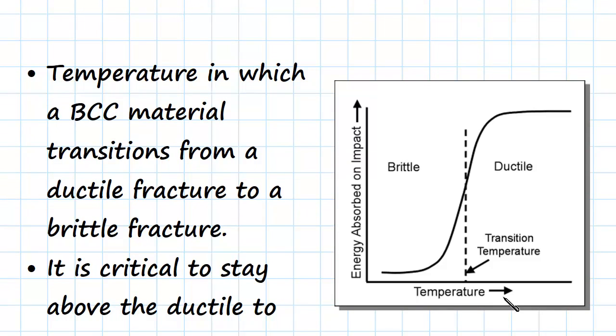we have a measure of temperature on the bottom, and energy absorbed, so the fracture toughness, is going to be on the y-axis. And as you can see, initially it's going through a ductile zone, and then very quickly at a certain temperature we've seen a very quick drop in the energy that can absorb the fracture toughness of a material.